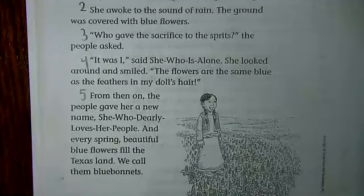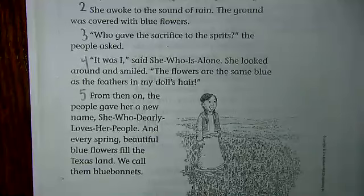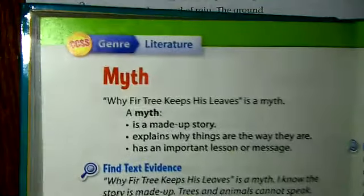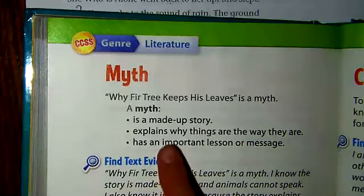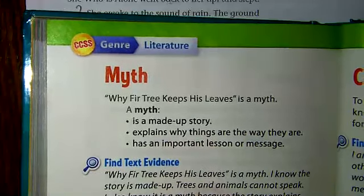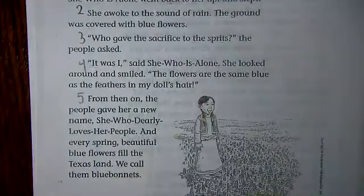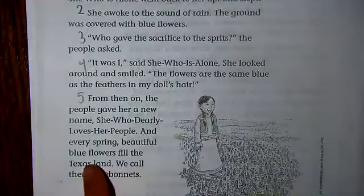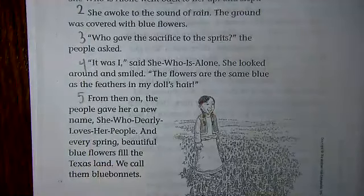From then on the people gave her a new name: She Who Dearly Loves Her People. And every spring, beautiful blue flowers fill the Texas land — we call them bluebonnets. If you remember, a myth is a made-up story, and it also tries to explain why things are the way they are. This myth is trying to explain why Texas has all these flowers called bluebonnets that appear in the spring.